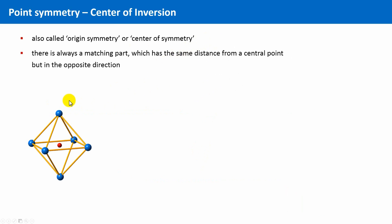An octahedron, for instance, has a center of inversion, namely right at the center of this octahedron. It has, of course, also other symmetry elements—mirrors, rotational symmetry and so on—